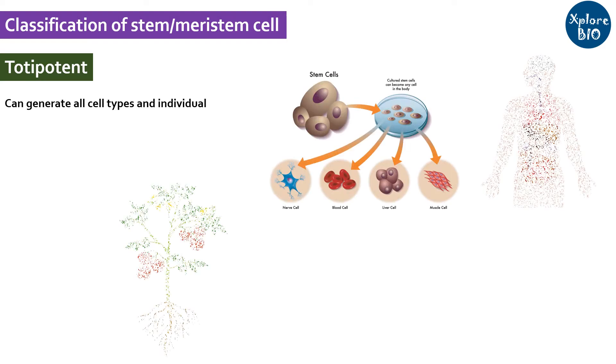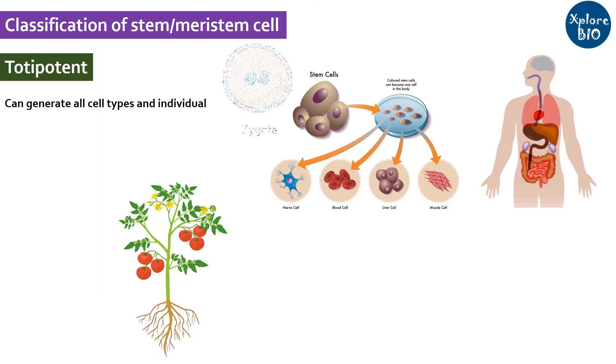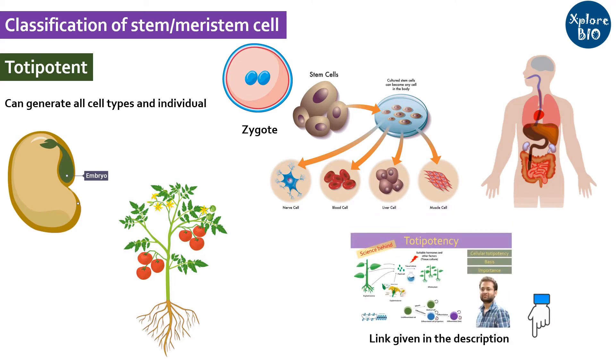Based on their potency to provide an ability to give rise to various feeds, meristem cells can be further classified into following types. A totipotent meristem cell can by principle form all types of cells and even an organism, for example, zygote and early embryonic cells in plants. I have also uploaded a separate video on totipotency. You may check it out later.